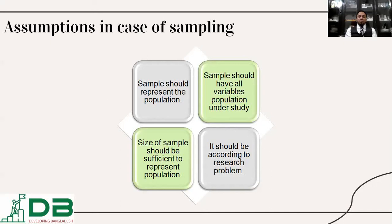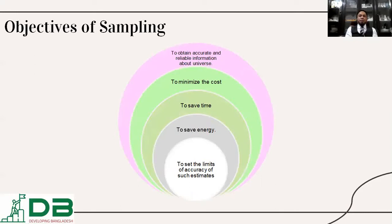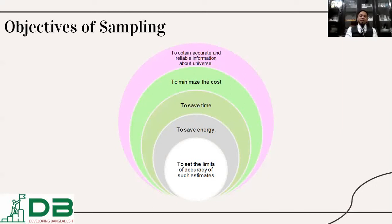The sampling should be according to the research problem. The overall objective of sampling should be to set a limit of accuracy to save energy, to save time, to minimize cost, and to obtain accurate and reliable information about the universe. For example, if we would like to allow 5% error in the sample, we will take a standard deviation of 0.05. And if we would like to allow 2% accuracy, then the value of the standard deviation should be 0.02.